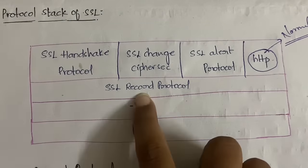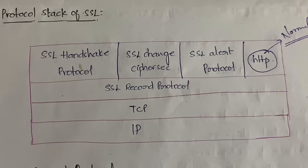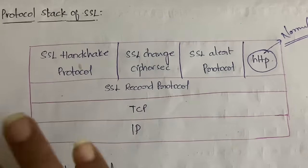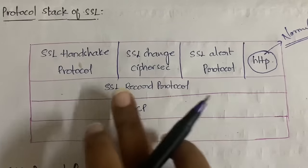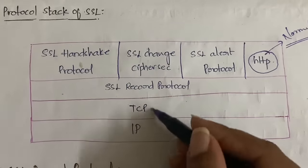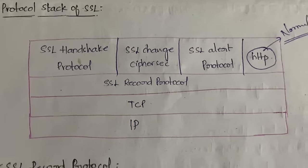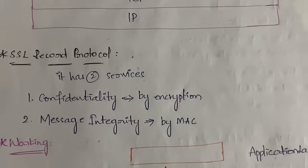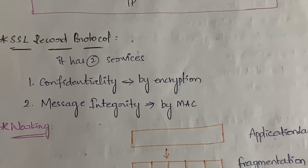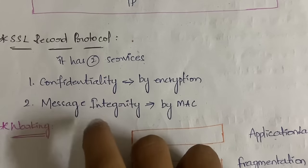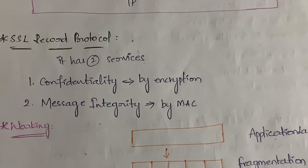In this video we will learn about the SSL Record Protocol. In the next part of the video I'll explain the other three protocols - Handshake, Change CipherSpec, and Alert - all at once. TCP and IP I won't explain separately since you already know them. SSL Record Protocol has two services: it provides confidentiality of the data and message integrity - meaning the message is not altered.